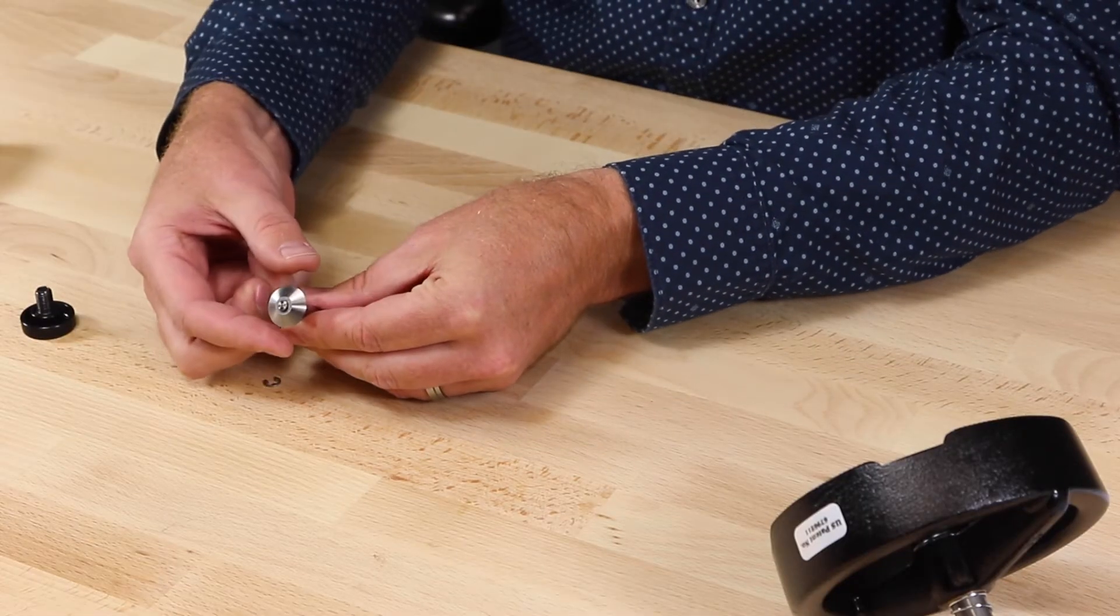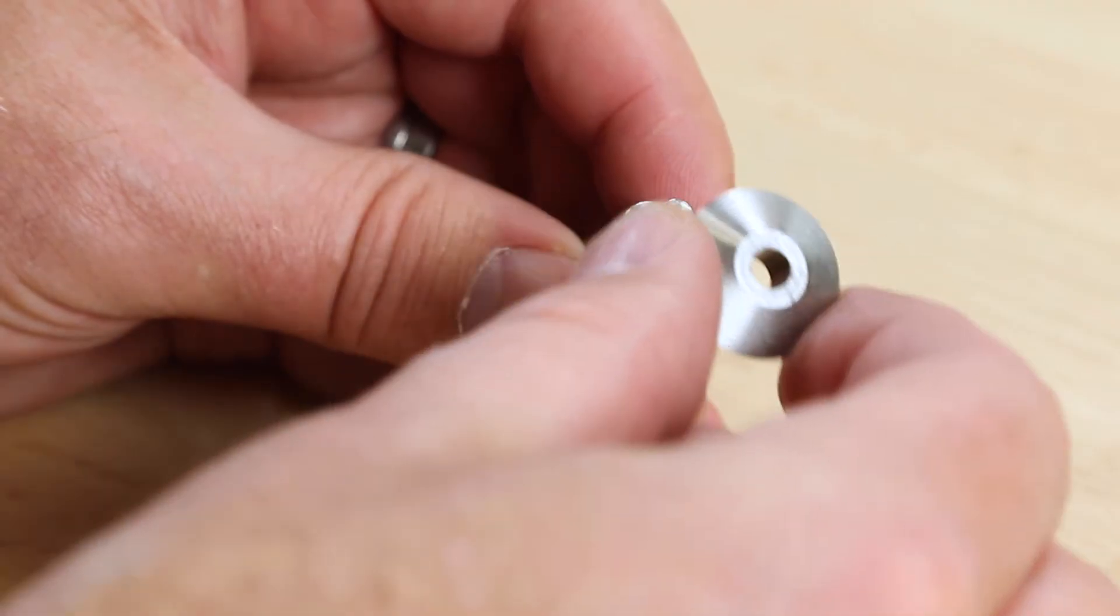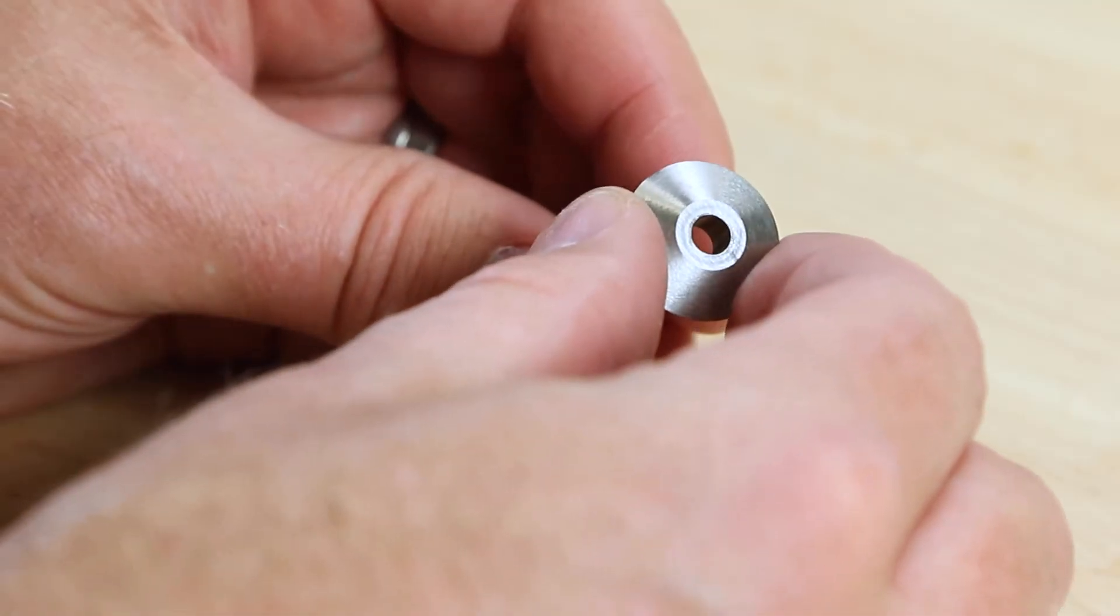I can then remove the actual blade. You'll want to be careful when handling the blade. It is sharp. I'll simply pull that off of the shaft and then put the replacement blade into place.